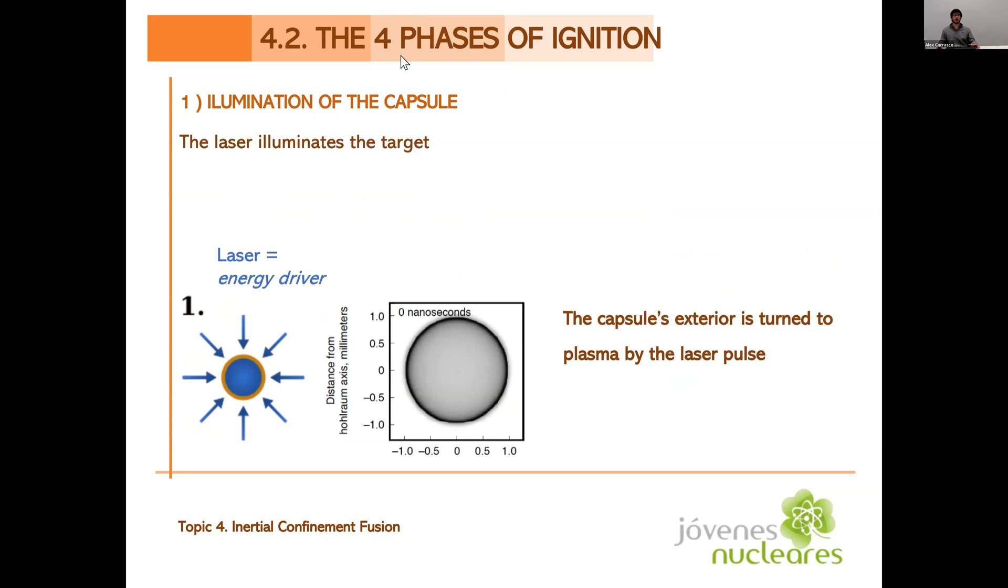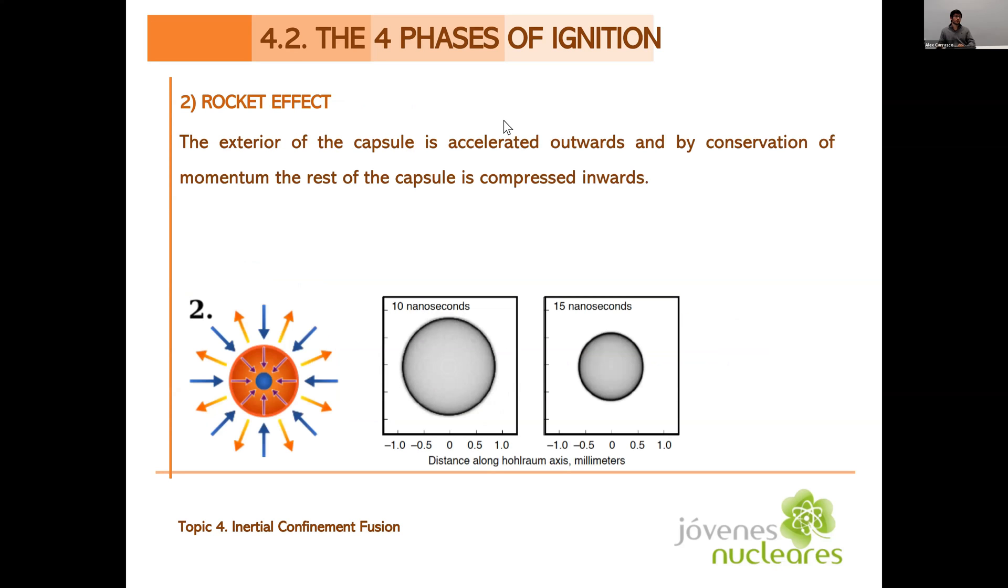So, now we're going to go into the second part of the presentation, the four phases of ignition. When the laser shines on the capsule, how do we get fusion? Firstly, the laser illuminates the target, the target being the capsule, and we're going to call the laser the energy driver, which is what gives us energy for the reaction. It illuminates the target, compressing the capsule, and making the exterior of the capsule accelerate outwards. If the exterior of the capsule turns into plasma, because of the very high energy deposition by the laser, and shoots outwards, this pushes the interior of the capsule with the fuel inwards, compressing it.